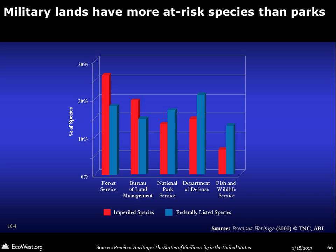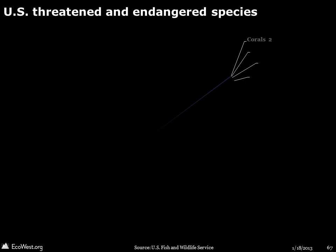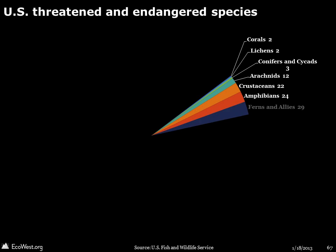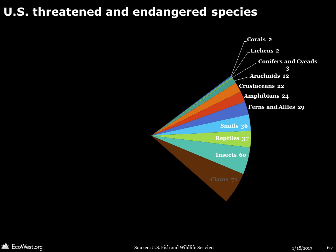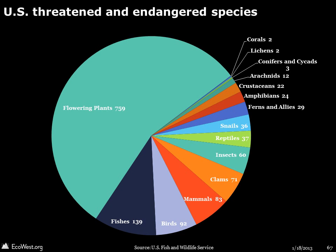On public lands, the greatest number of federally listed and imperiled species is found in national forests. But military lands, many of them located in the West, actually have a greater share of imperiled and endangered species than our national parks or national wildlife refuges. This graphic shows the composition of US threatened and endangered species. More than half of them are plants, which receive less protection under the law. Although insects make up the bulk of species that we know about, very few are protected by the ESA.